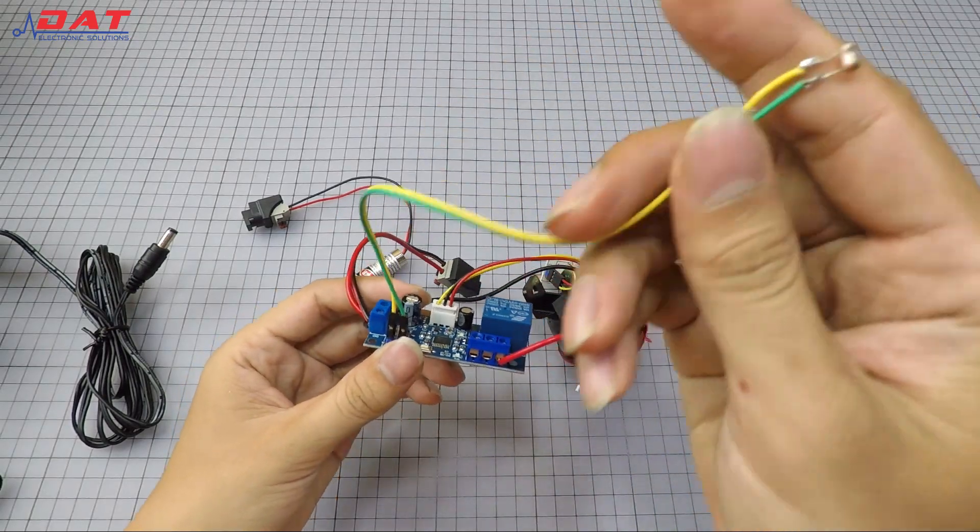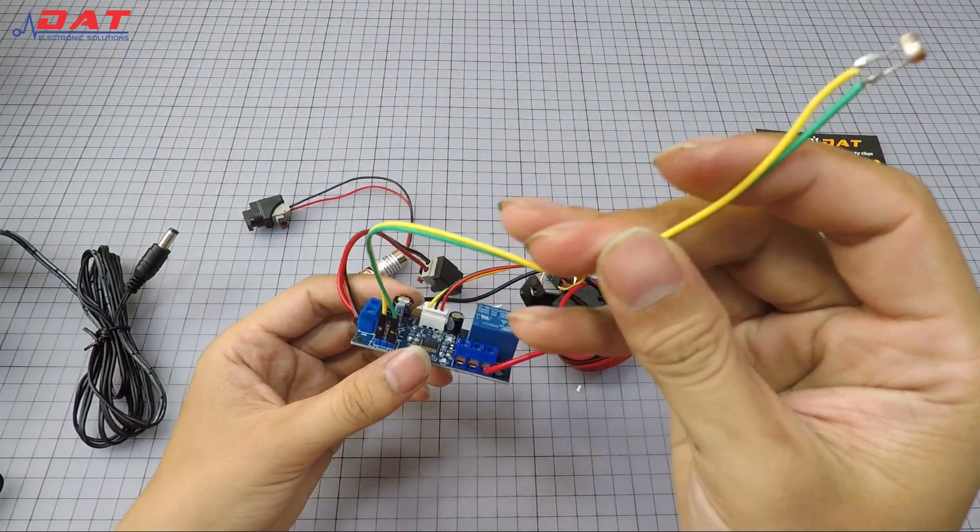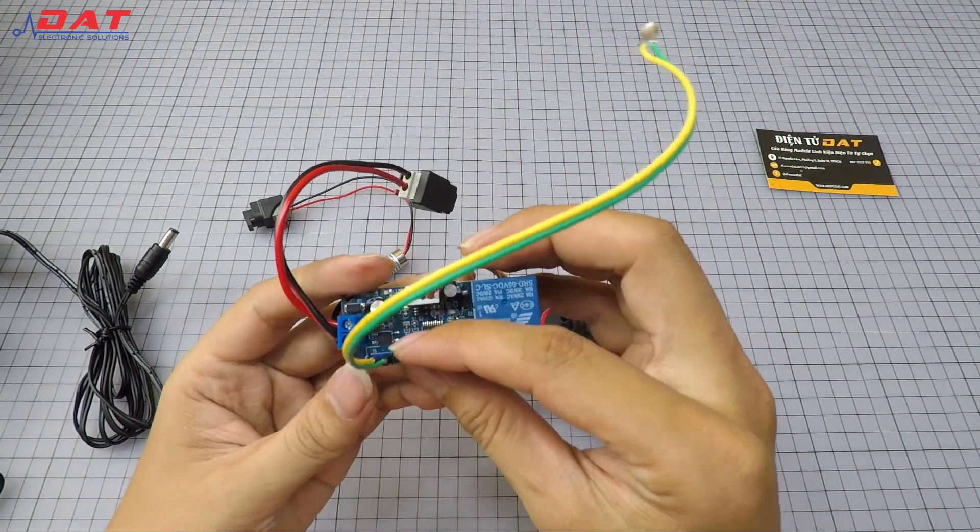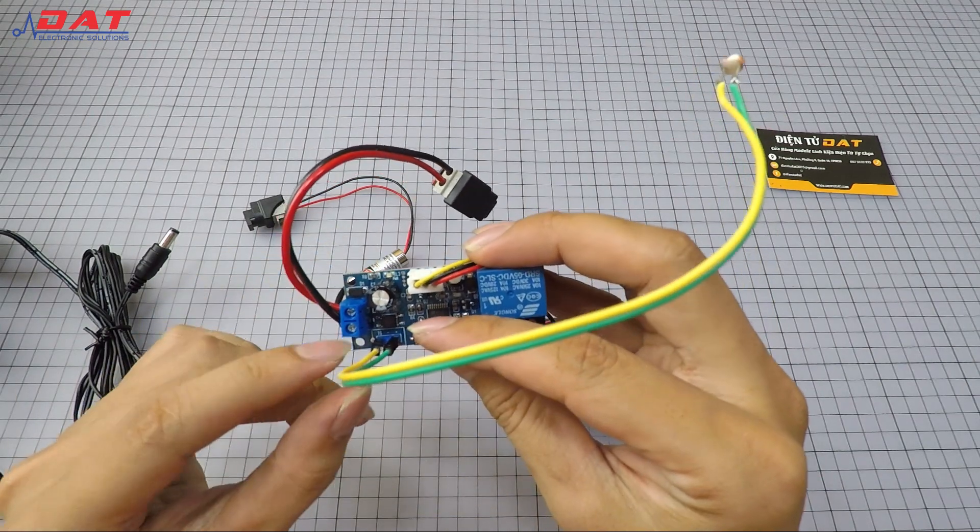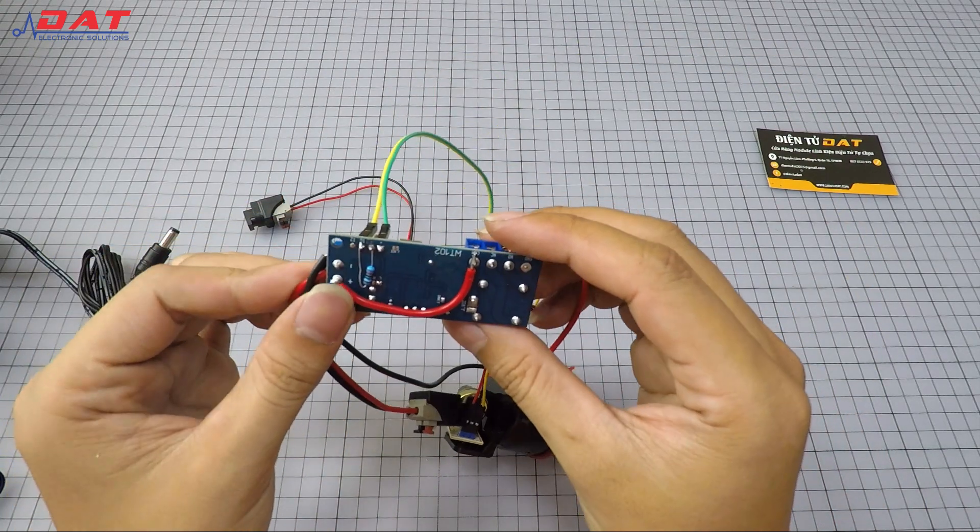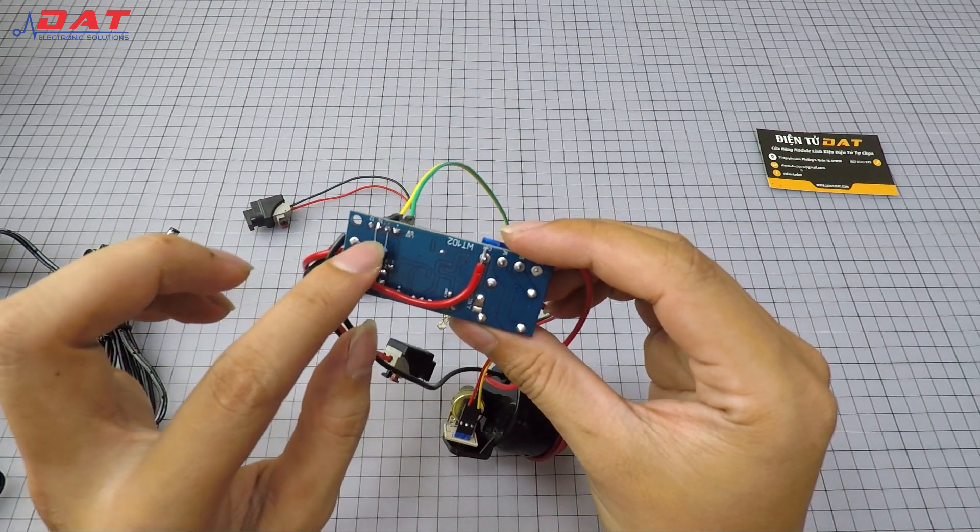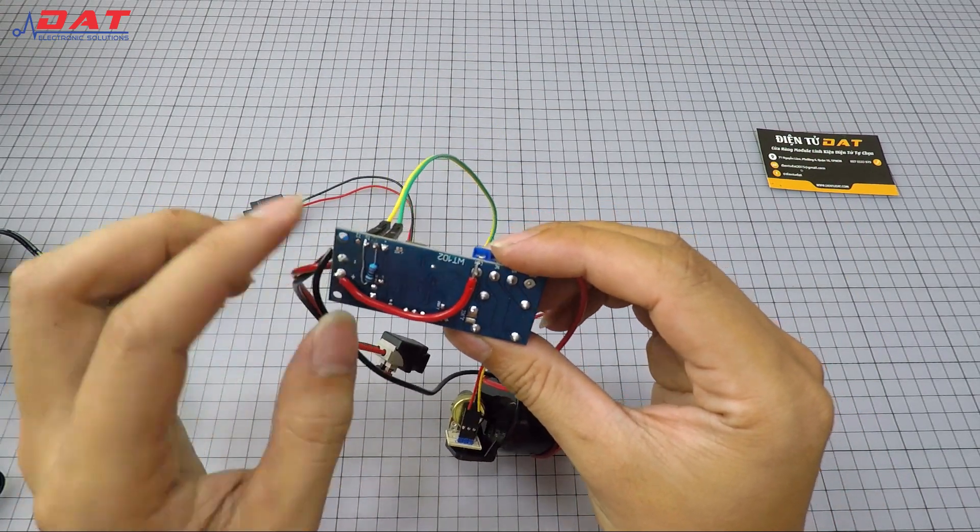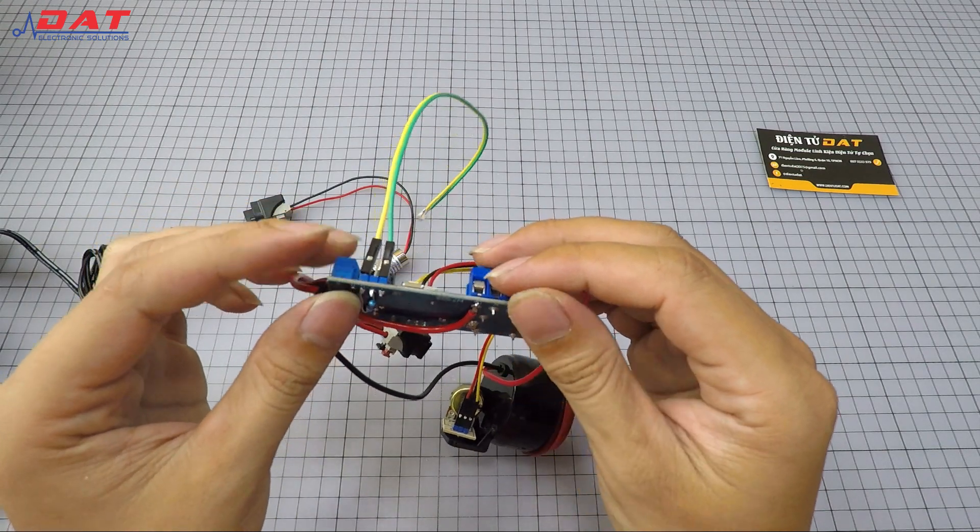Here I've finished the assembly. The two terminals of the photoresistor connect to the circuit board - one terminal connects to the positive pin, the other connects to the TG pin. For the 220 ohm resistor, one terminal connects to the negative pin and the other connects to the TG pin.